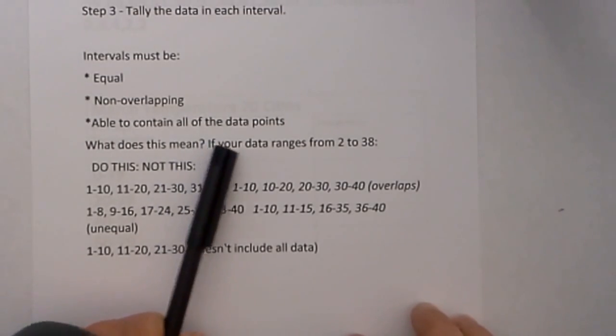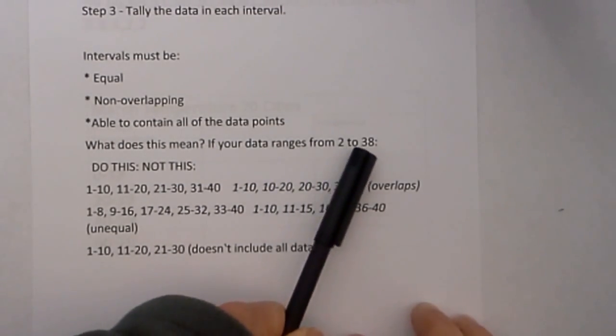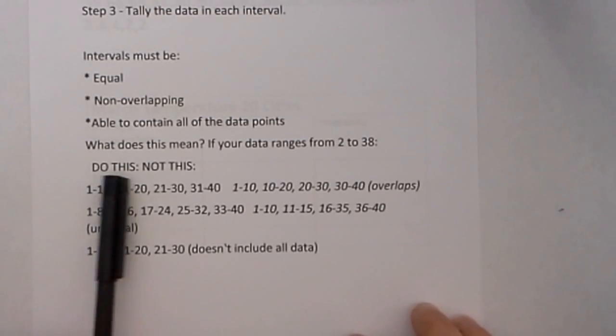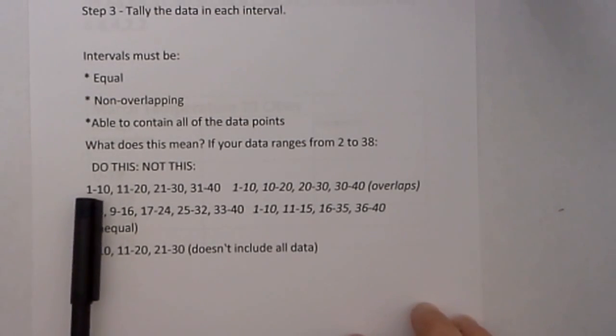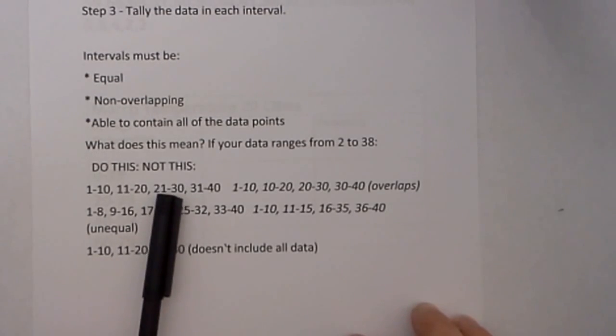Let's see what this means. If your data range is between 2 and 38, let's do this and not this. Let's do this because you have 1 to 10, 11 to 20, 21 to 30. Notice that there is no overlap.